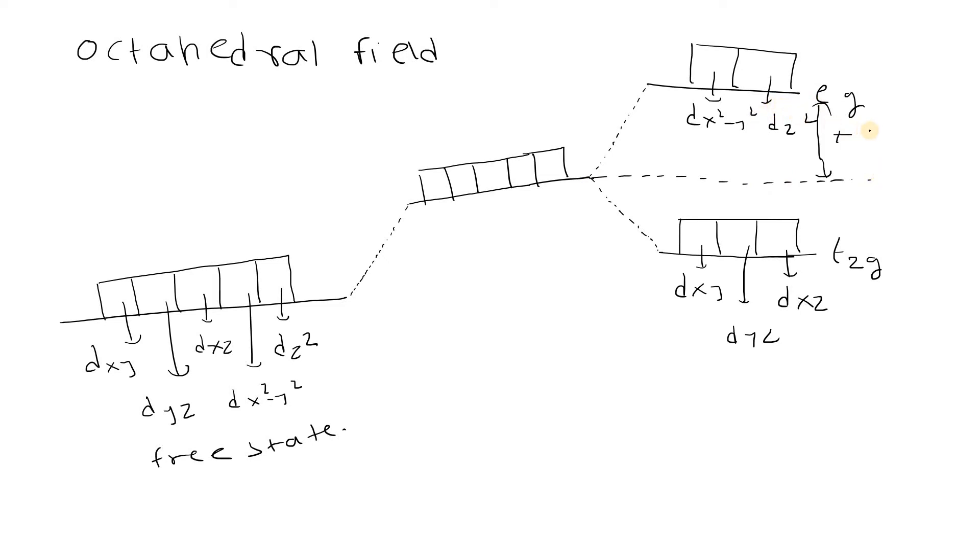This energy is higher than the barycenter. This energy is 0.6Δ0, and here this energy is below the barycenter, which is minus 0.4Δ0. The total energy if you add by magnitude is Δ0. Δ0 is the crystal field stabilization energy. When an electron occupies the t2g level, it will be accompanied by the loss of energy, which is why we have given the negative sign.